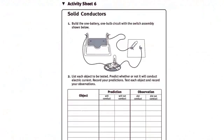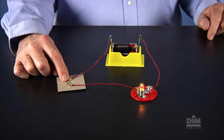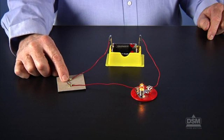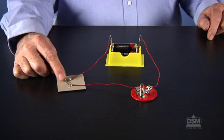Distribute a copy of Activity 6 to each student and the materials to each team. Instruct teams to construct a one battery, one bulb circuit with a switch assembly, as shown in the diagram at the top of their activity sheets.